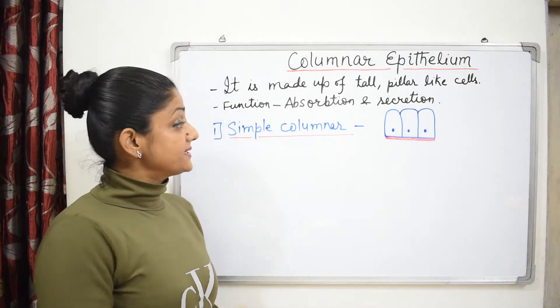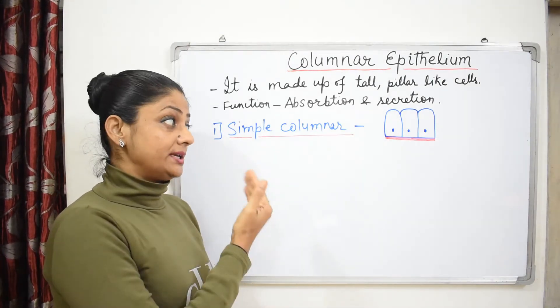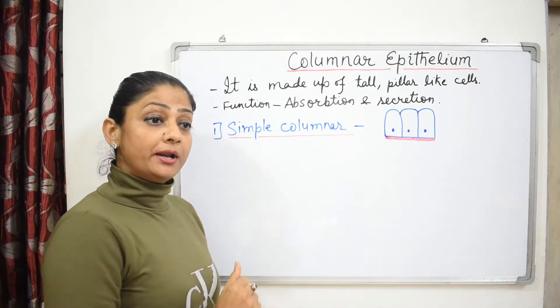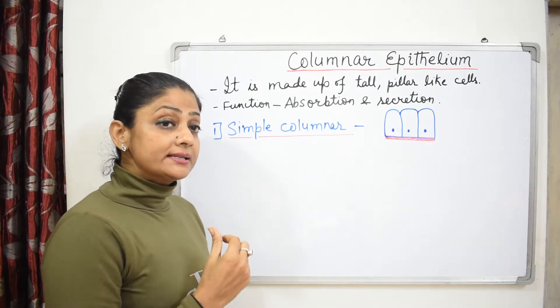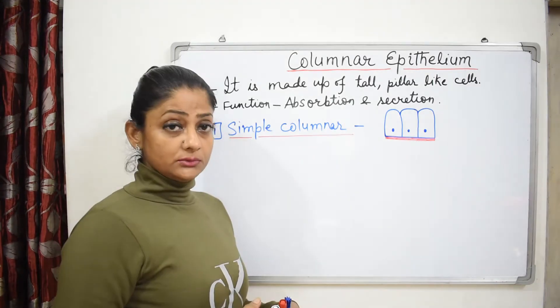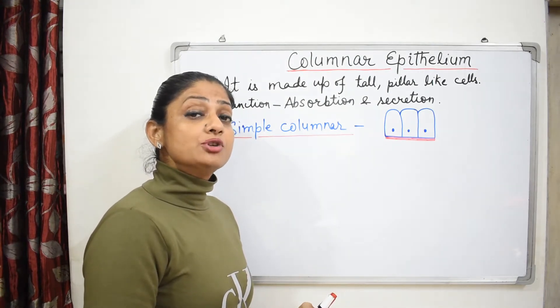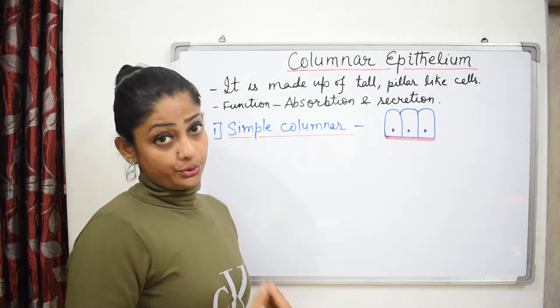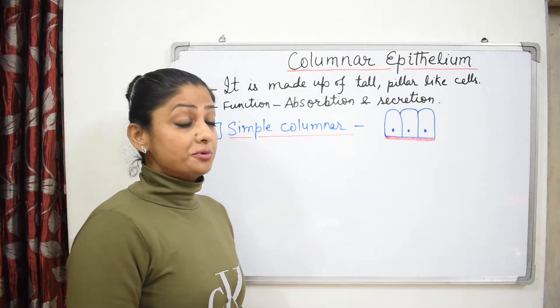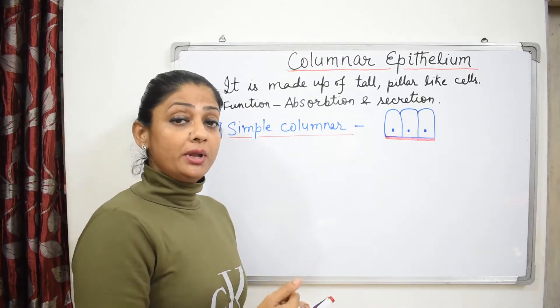First type is simple columnar. Because it is simple columnar, it will be made up of one layer and it will be found in the lining of our intestine. What we eat, the nutrients from the intestine, the absorption is helped by simple columnar.